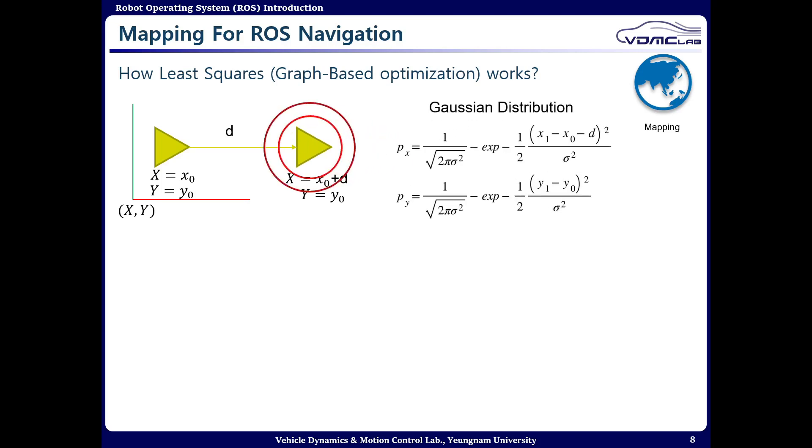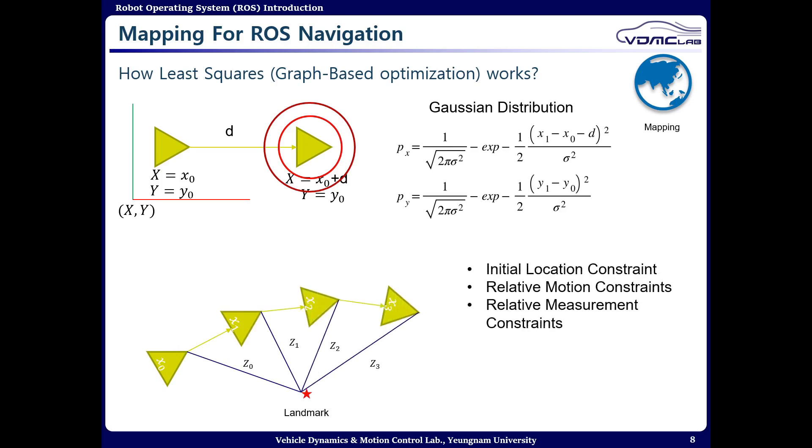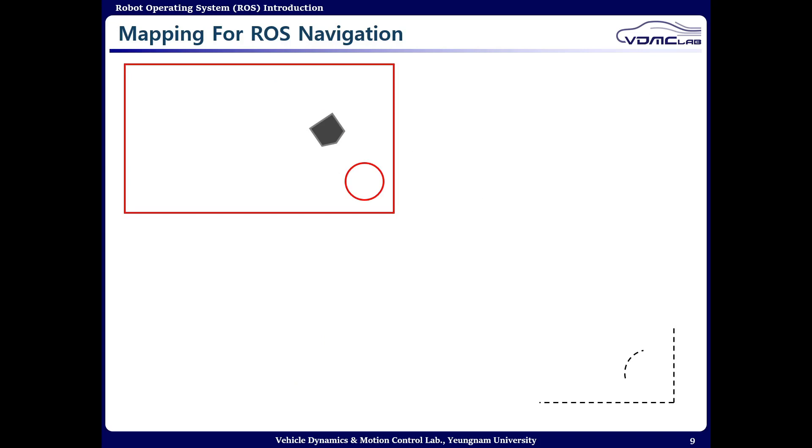Now let's assume the robot is moving to x0, x1, x2, and x3 positions calculated by the odometry data, and from a fixed landmark the positions are z0 to z3. So basically we have three constraints: initial location constraint, relative motion constraint, and relative measurement constraint. We are going to perform our mapping through these constraints and data sets, and of course we have some errors. Now I am going to show you how we are going to optimize those errors and get a nice map of the environment.